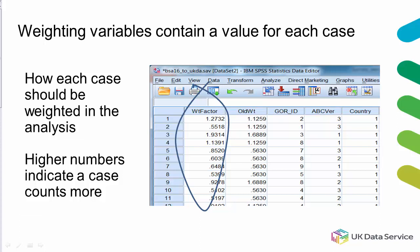Higher numbers indicate that the case will count for more. For example, we'll find higher weights for people who live in larger households and for those coming from population groups underrepresented in the sample due to either chance or non-response.